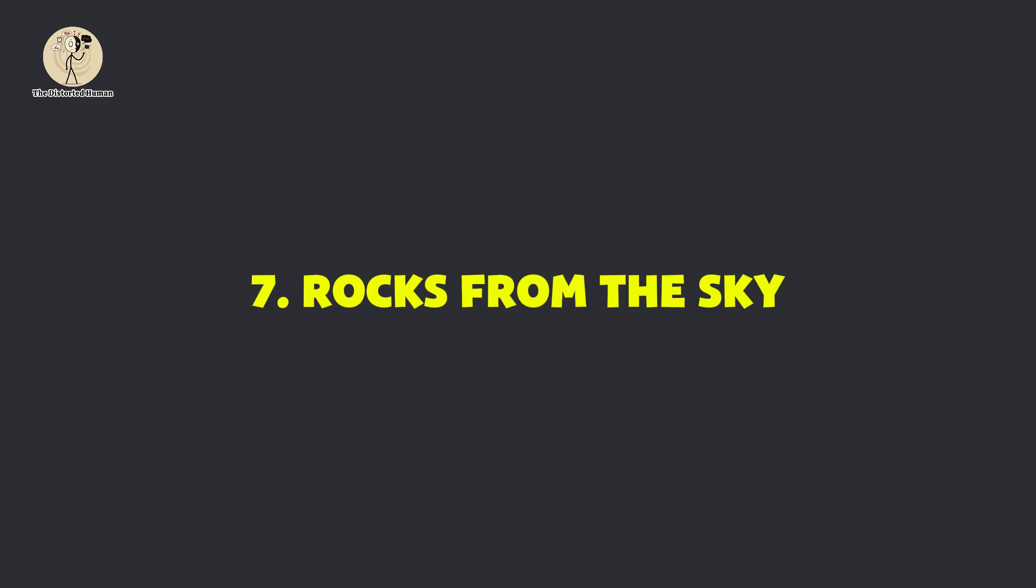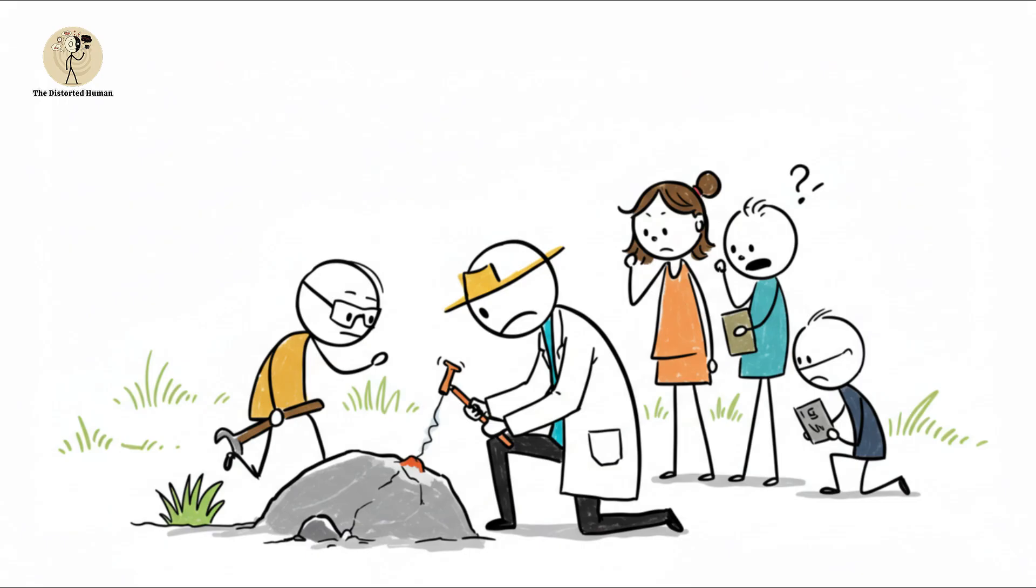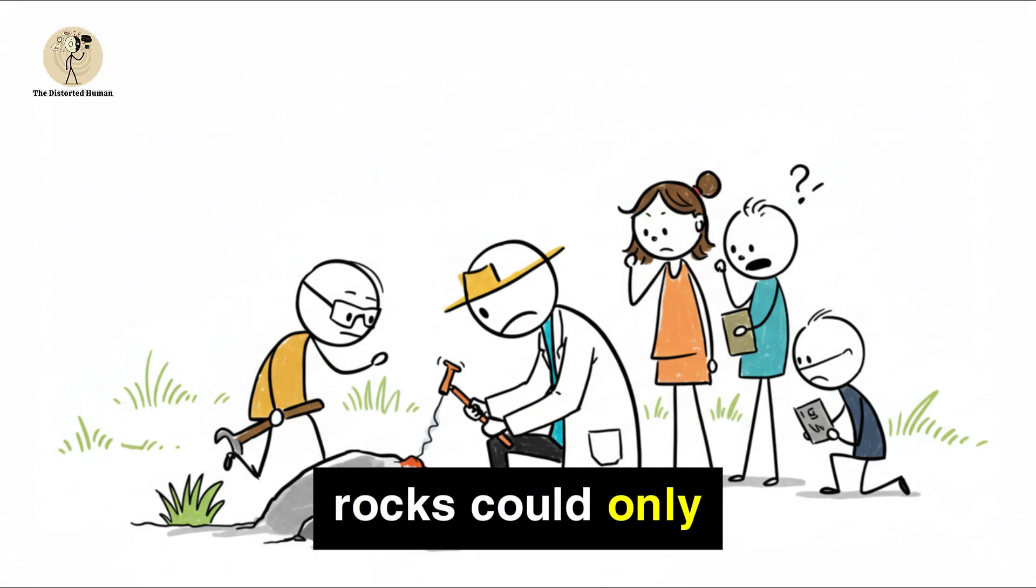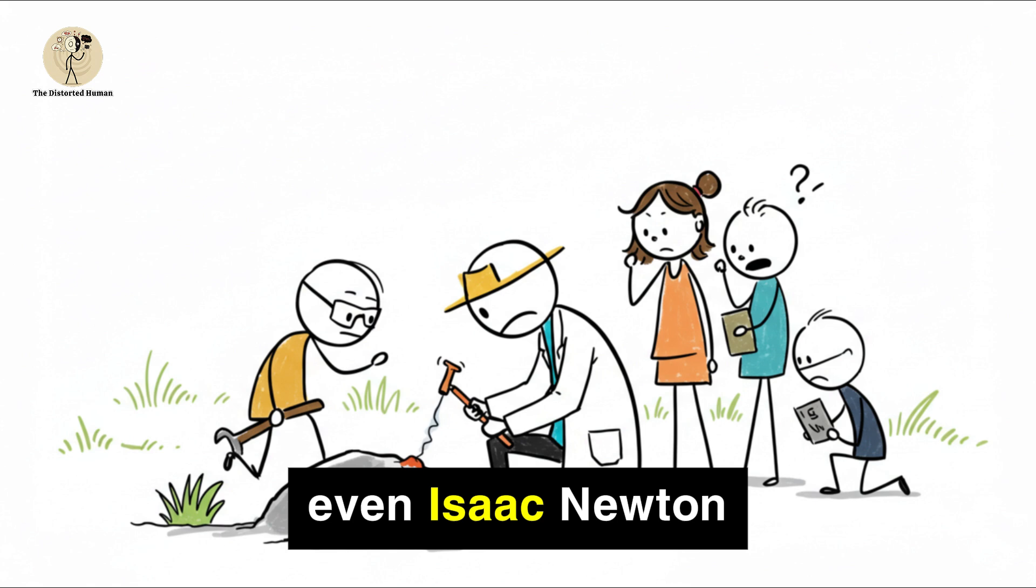Rocks from the sky. In the 1700s, most scientists believed rocks could only come from Earth. The idea that stones might fall from the heavens was dismissed as superstition. Even Isaac Newton doubted it. But in 1803, everything changed.